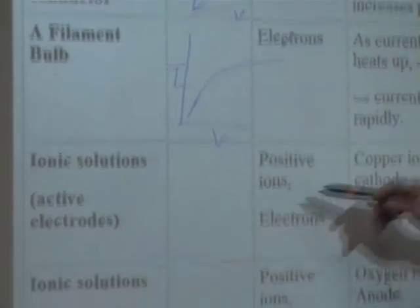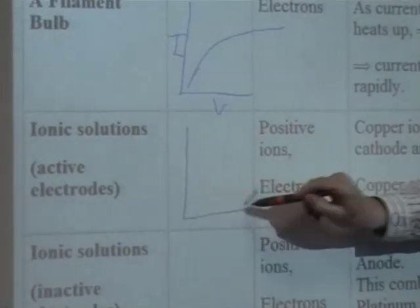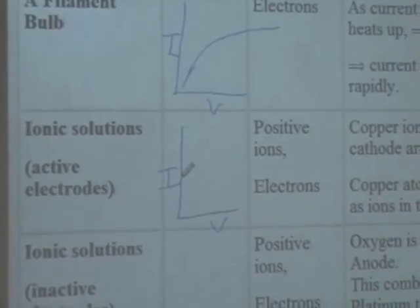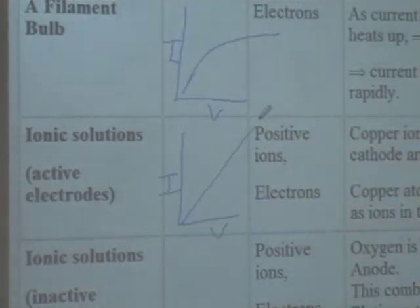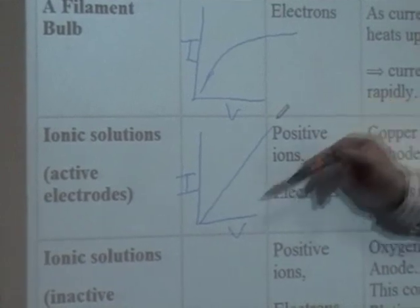Ionic solutions, active electrodes. In this case, it's the copper ions. This is the experiment that you did the last day. Once again, you've got V, you've got I. And what graph should you have got? Straight line to the origin. And if you wrote it up and if you plotted it, you really should have got that because it is very, very stiff.